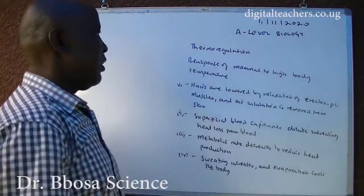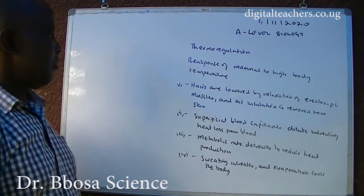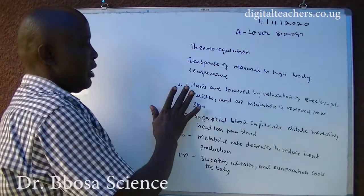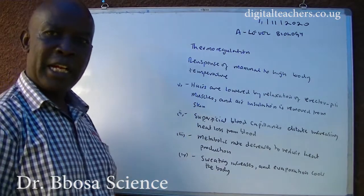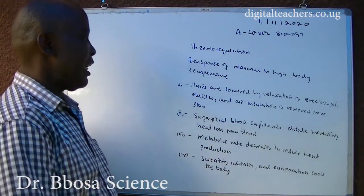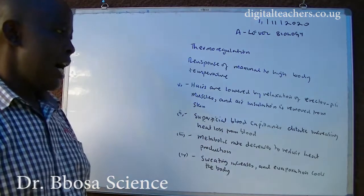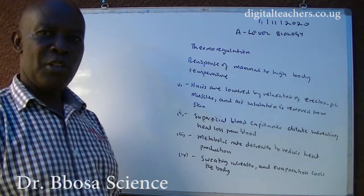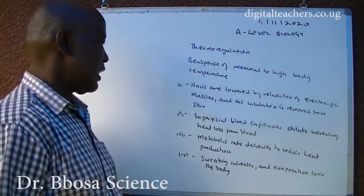Responses of mammals to high body temperature: 1. Hair is lowered by relaxation of erector pili muscles; air insulation is removed from the skin.